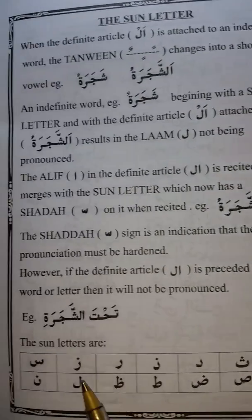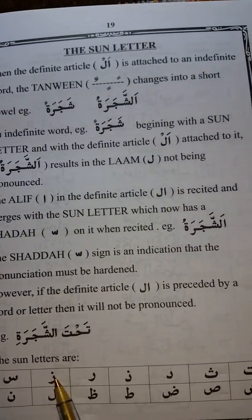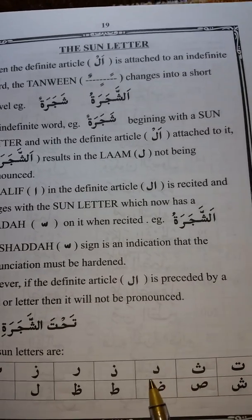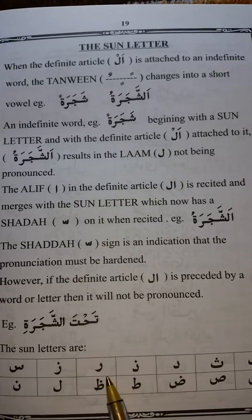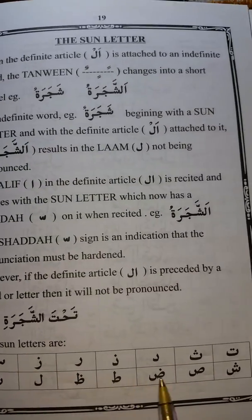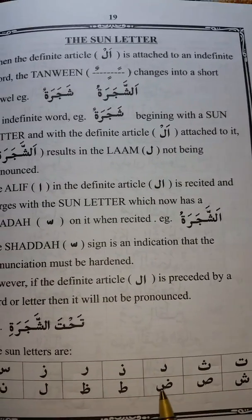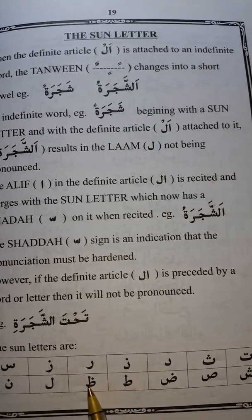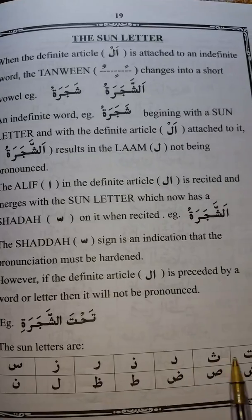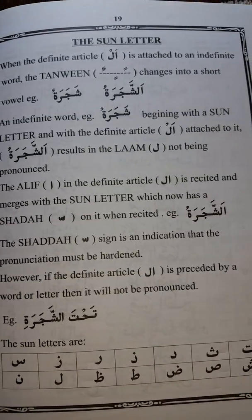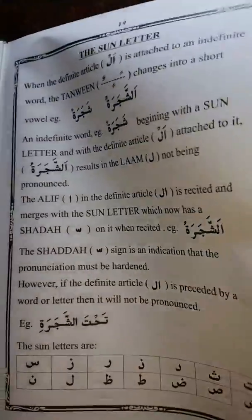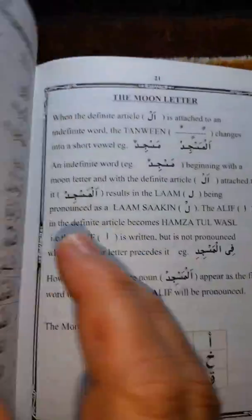So how many, which ones are the sun letters? Ta, Tha, Dal, Zal, Ra, Zed, Sin, Shin, Swad, Doa, Toa, Zua, Lam, Nun. So try not to memorize all of them at once, just in case you are overloaded with the letters. Just go by the examples as we go.